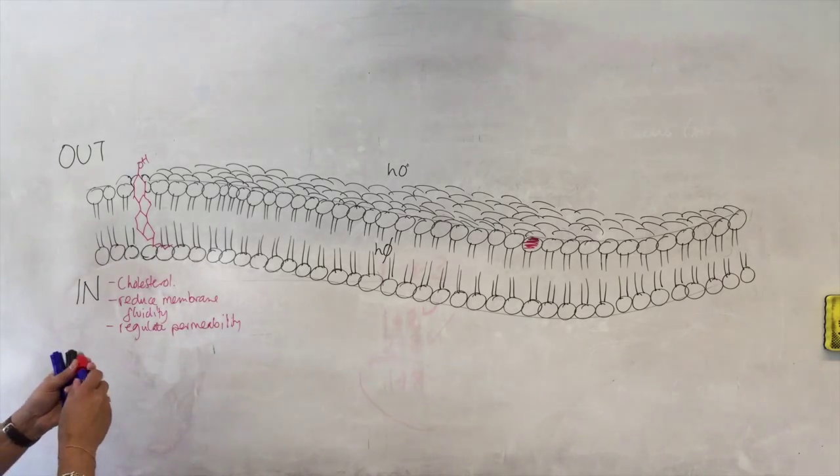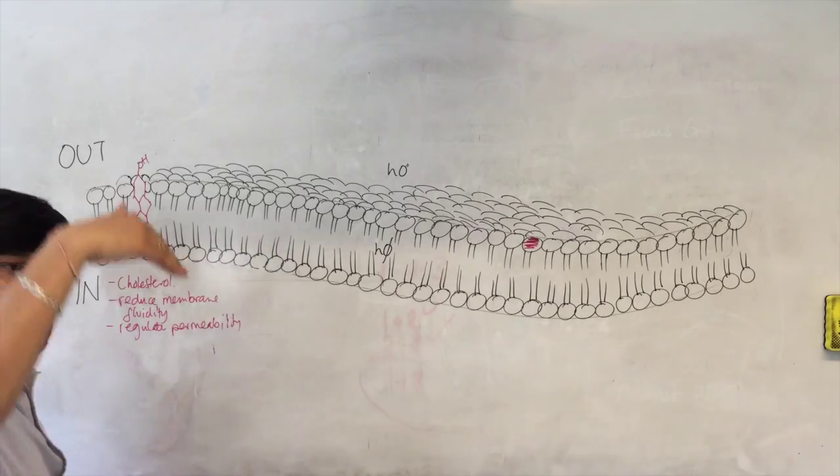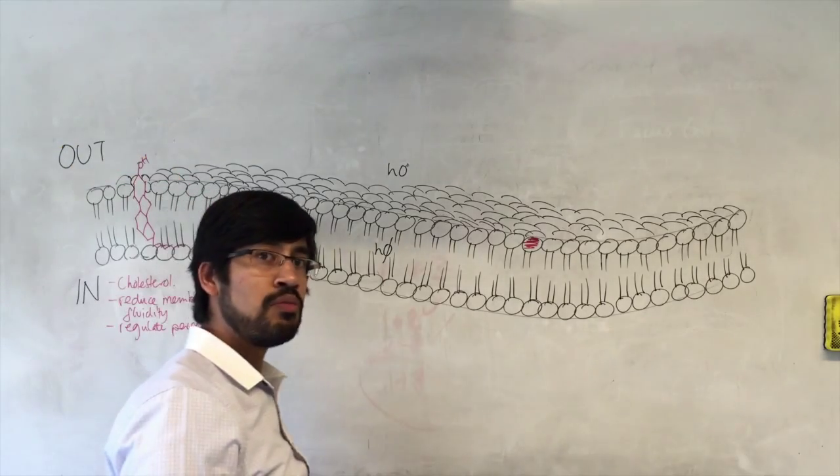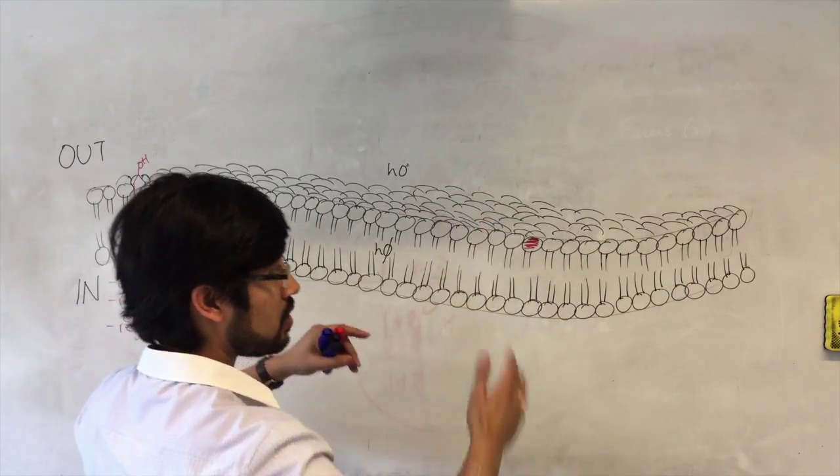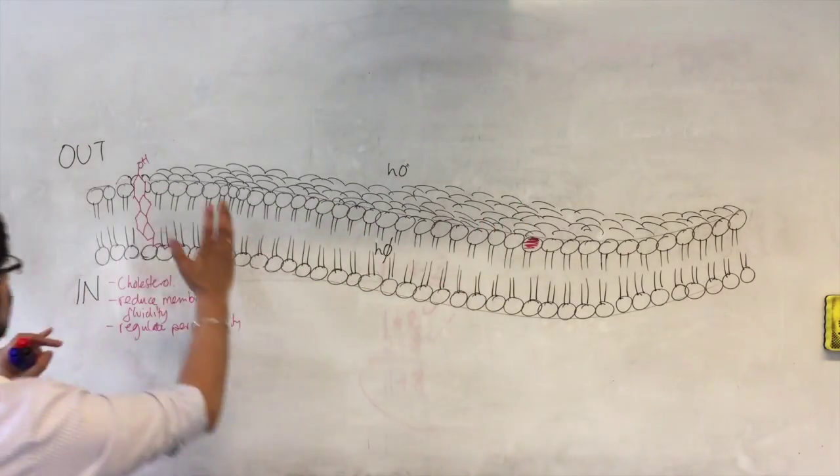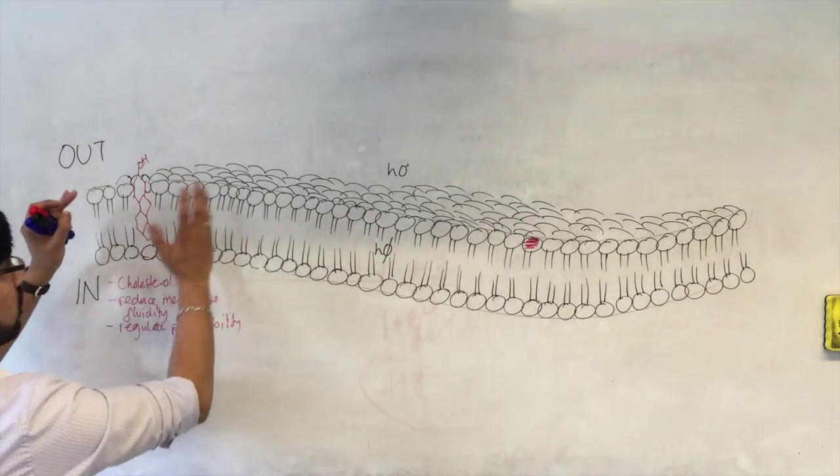Because when the phospholipids are moving around really quickly, it allows things to pass through more quickly, things that maybe we want to keep outside, or we want to keep inside.